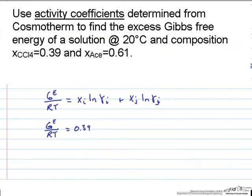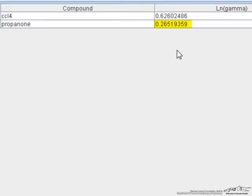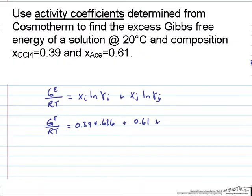plus mole fraction acetone 0.61 times ln of gamma for acetone. So in this case the ln gamma is 0.265, so 0.61 times 0.265.